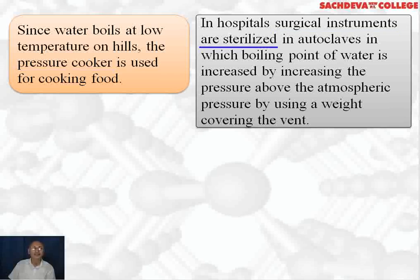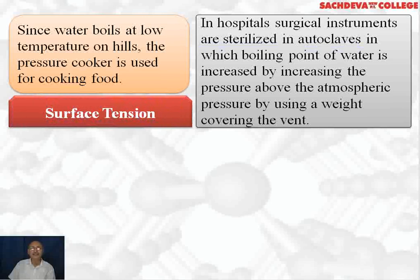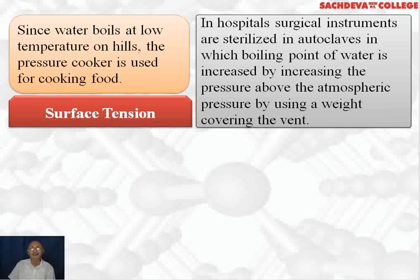In hospitals, surgical instruments are sterilized in autoclaves in which the boiling point of water is increased by increasing the pressure above atmospheric pressure using a weight covering the vent. In a pressure cooker, water boils at a higher temperature because the steam formed exerts pressure on the liquid water, increasing its boiling point. The latent heat of steam is also used in cooking, which is why a pressure cooker cooks vegetables and pulses faster.